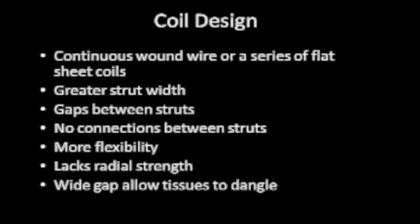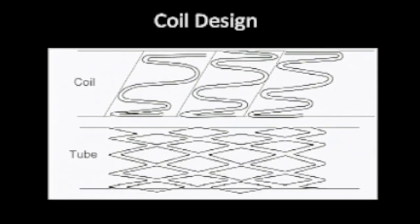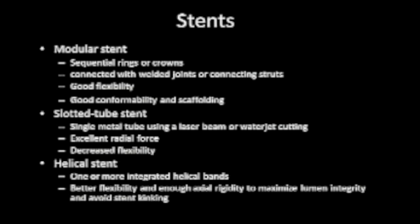There are two groups of stents: coil designs and tube designs. A coil design is a continuous wound wire series of flat coils with greater strut width but no connections between the struts — more flexible but less radial strength, so it can collapse more easily, and there is a wide gap that allows tissues to dangle. There are also all types including modular, slotted tube, and helical stents. The more rigid they are, the less flexible but the more radial force and hoop strength they provide.